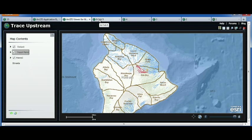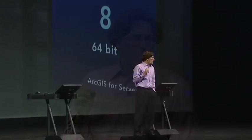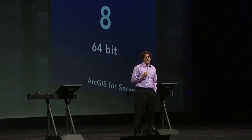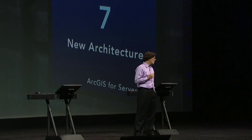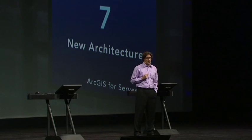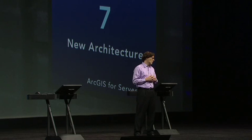Now let's talk about what is coming in the next release of Server in 10.1. Number eight is 64-bit native execution for Server. Number seven is the new architecture. In 10.1, ArcGIS becomes a pure web services GIS server — it's a peer-to-peer architecture, which is much simpler and robust.